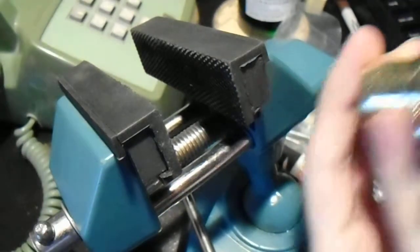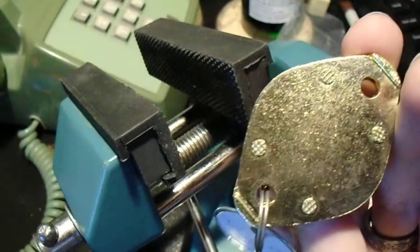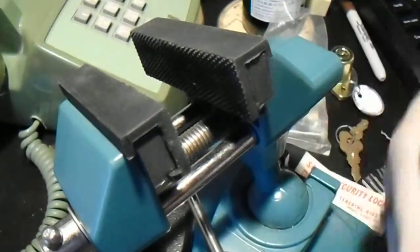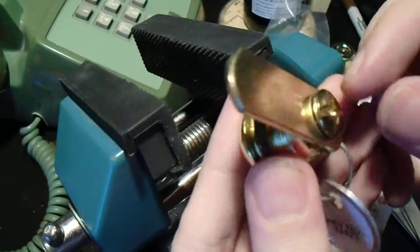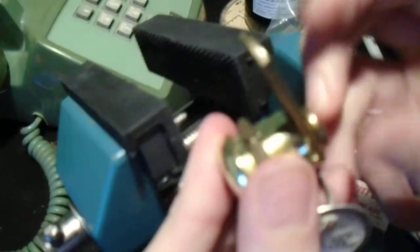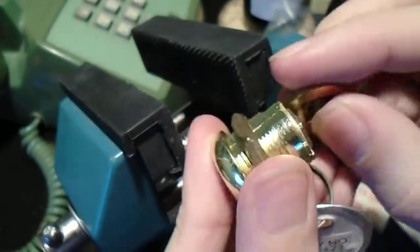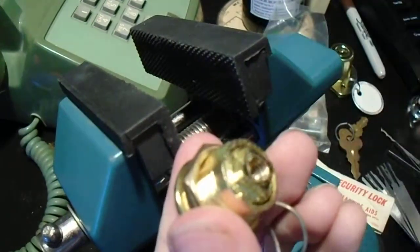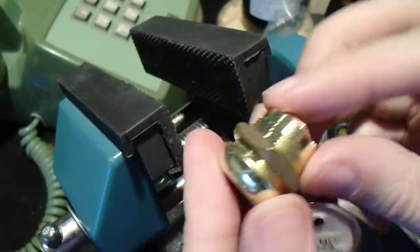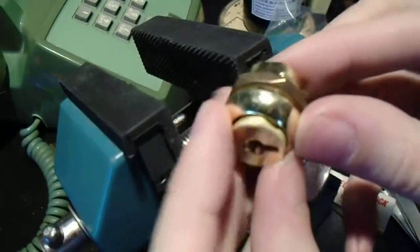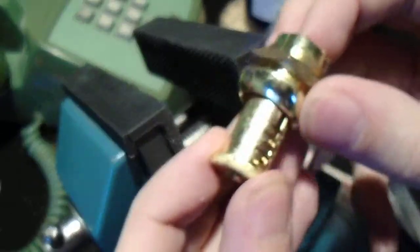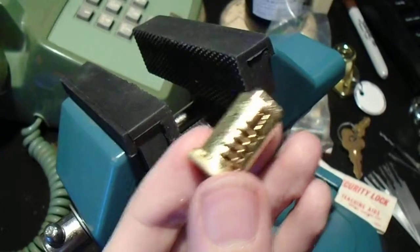Now, unfortunately, I can't take this one apart because it's riveted together, but I have this other standard cam lock, which is also a wafer lock. And I'll show you how those normally fit together. You just take this screw that holds the tailpiece on off, and you can just slide the whole thing out.